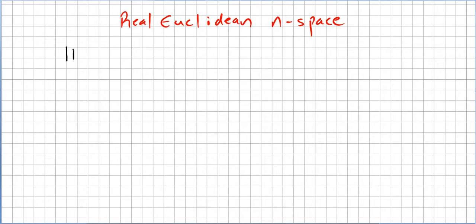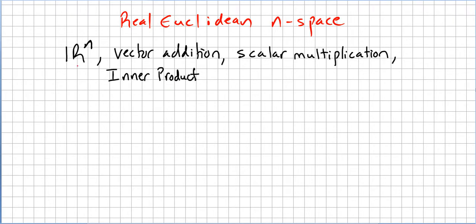So a set Rn, or a space, a vector space Rn, with vector addition and scalar multiplication. So a space Rn with vector addition, scalar multiplication, and an inner product defined so that we have a notion of distance or length. If you have all this, you have a real Euclidean n space.